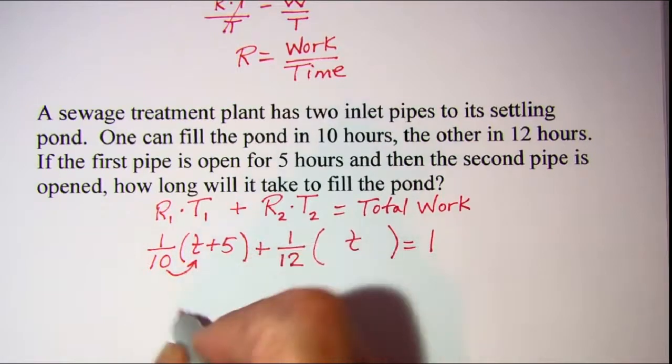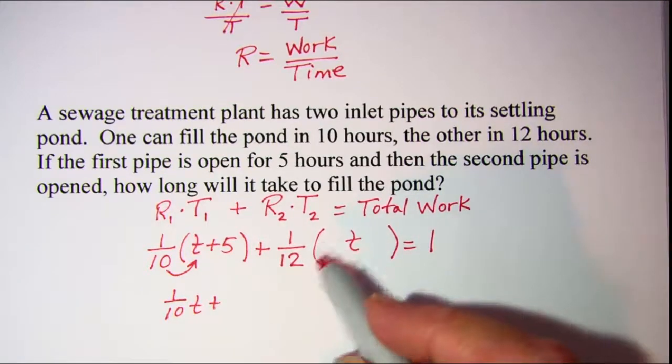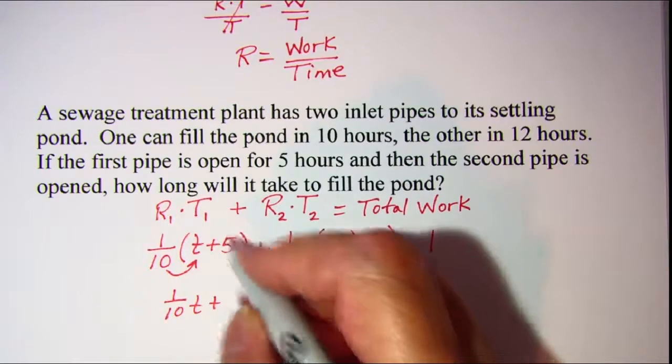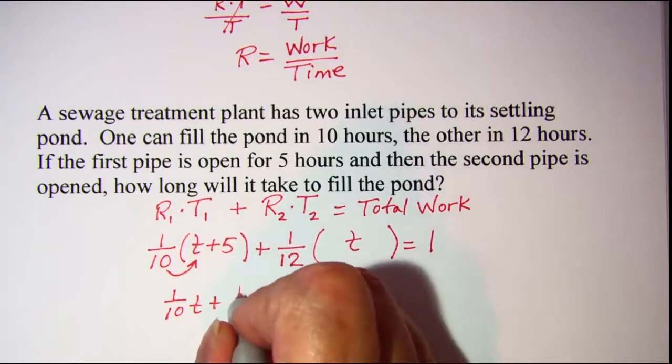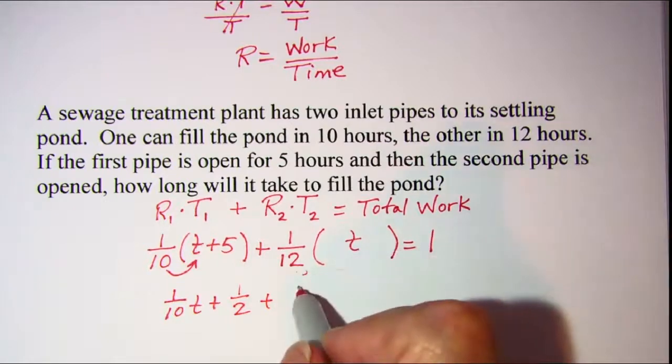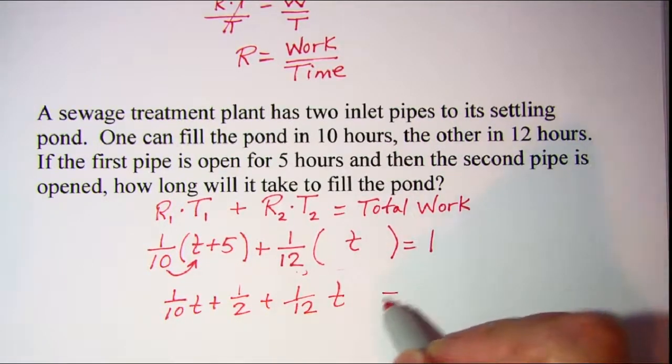We have 1 tenth t. 1 tenth times 5 is 5 tenths, which is 1 half. This is just 1 twelfth t. And that equals 1.